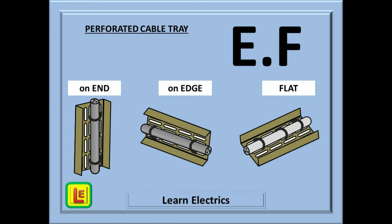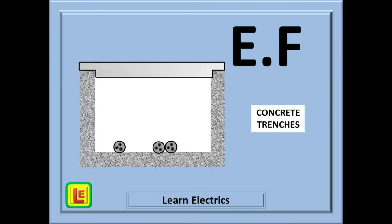Now, the perforated cable tray can also be laid on its back so that it is flat. And what does flat begin with? F. So, that has covered the reference methods E and F for perforated cable trays.